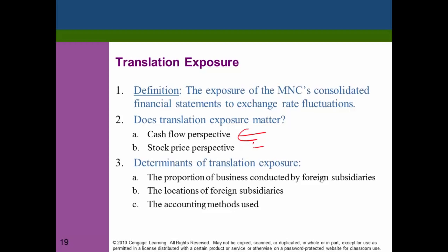From a stock price perspective, translation exposure can have an effect. The money earned outside the US must eventually be converted into US dollars. When you report earnings, exchange rate changes affect earnings per share, which in turn affects stock price through a ratio like the P/E ratio — price per share divided by earnings per share. So a change in earnings caused by exchange rate movements can affect the stock price.